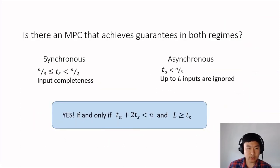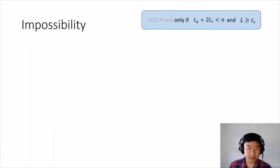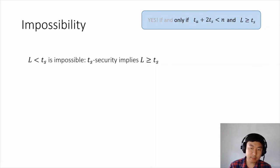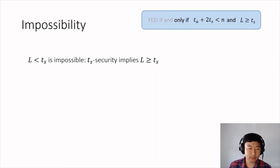Now we proceed to the lower bounds. The first lower bound says that it is unavoidable to ignore the inputs of up to TS parties, and this holds independently of what the corruption threshold is in the asynchronous case — that is, even when TA equals zero.